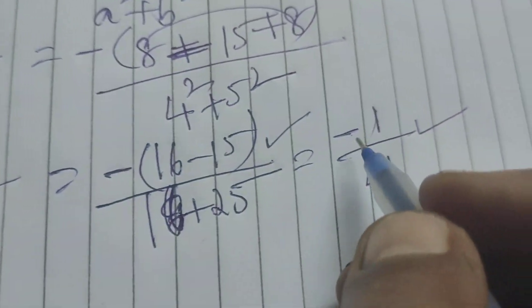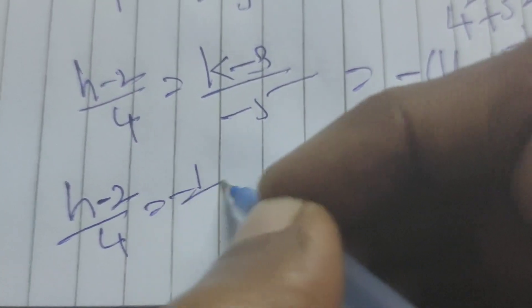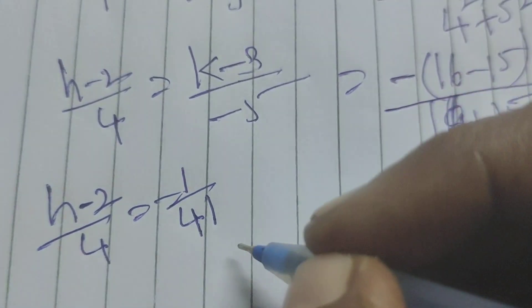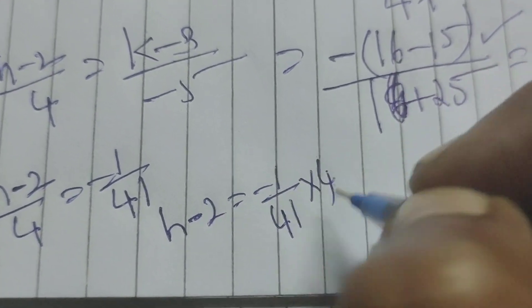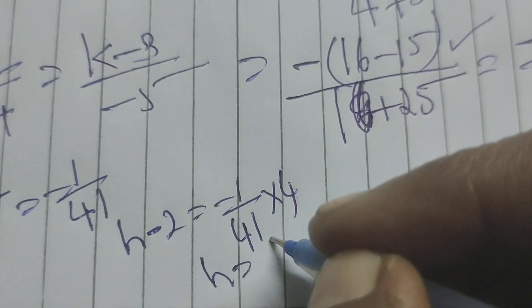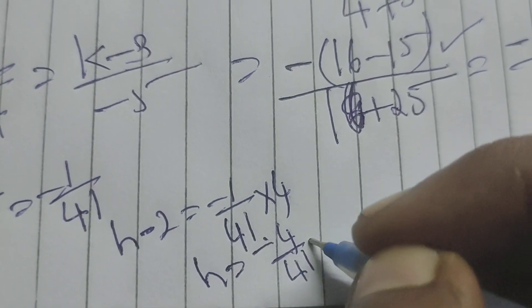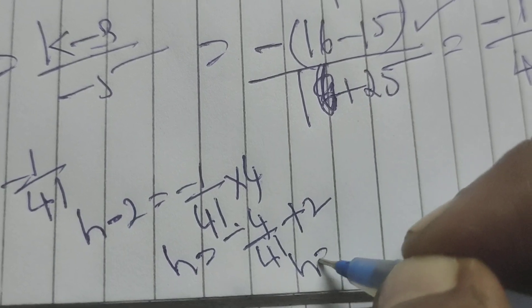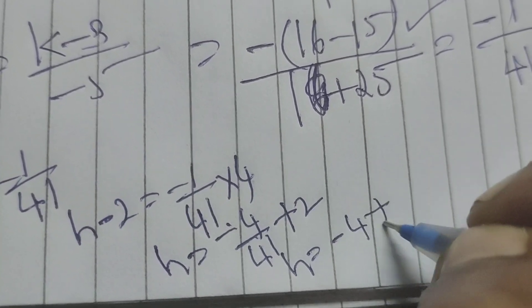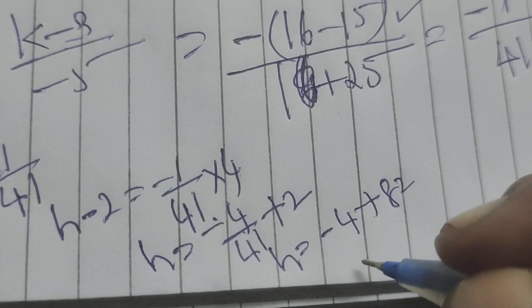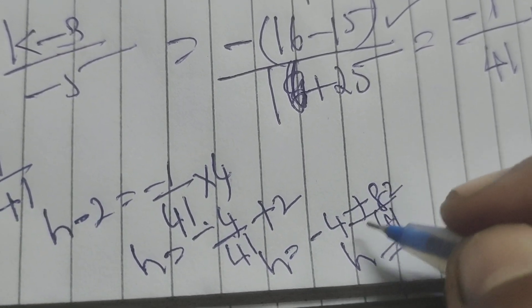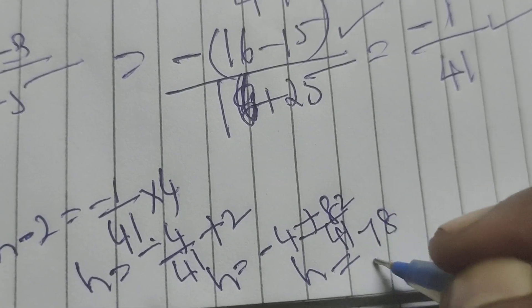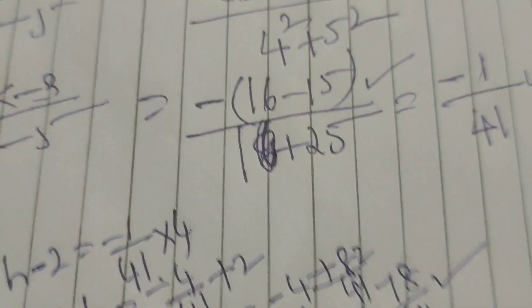Now equating to find h and k values: h minus 2 by 4 equals minus 1 by 41. Then h minus 2 equals minus 4 by 41, so h equals minus 4 by 41 plus 2, which gives h equals 82 minus 4 by 41, that is 78 by 41. This is the h value.